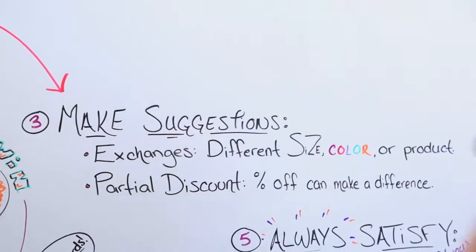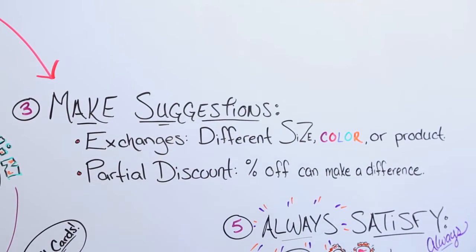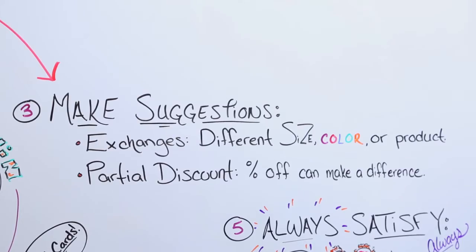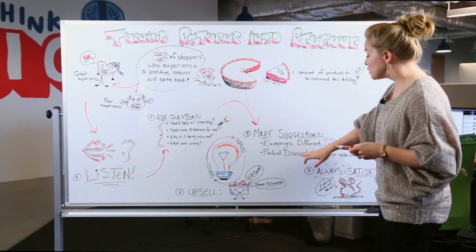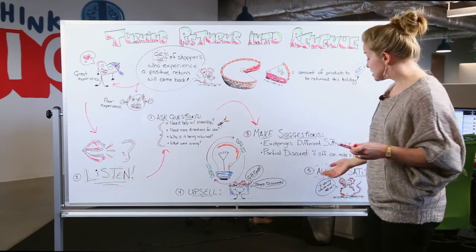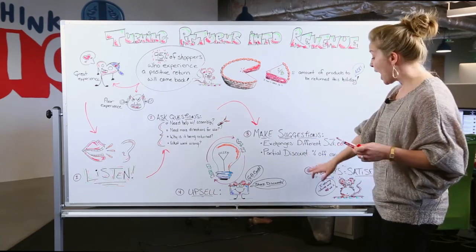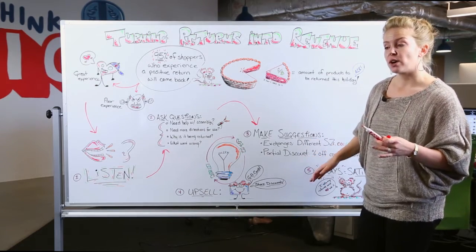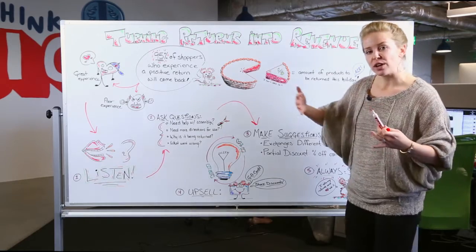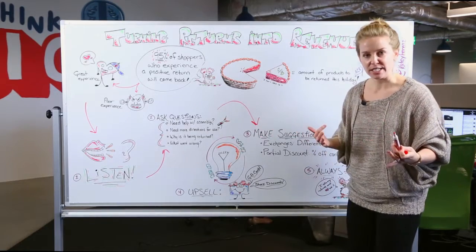From there, having all the information, you can make some really great suggestions that'll benefit you as well as the customer too. So it's kind of a win-win here. So first one, exchange. Do they just actually need a different size, color, or product? Or perhaps you can do a partial discount. So customer gets the thing that they need. You still get to keep some revenue. Definitely a good tactic there.